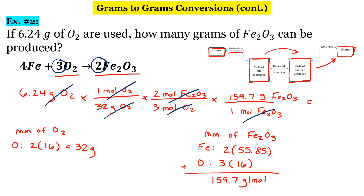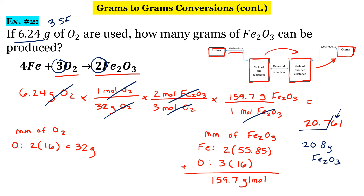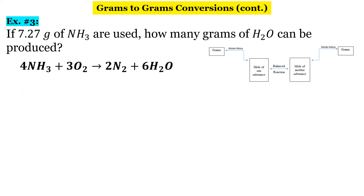When I type this into my calculator, I get 20.761. We have three significant figures in our original number, so we need three in our final answer. Going from left to right and looking at our fourth number, we're going to round up to 20.8 grams of iron oxide. Let's do one more.